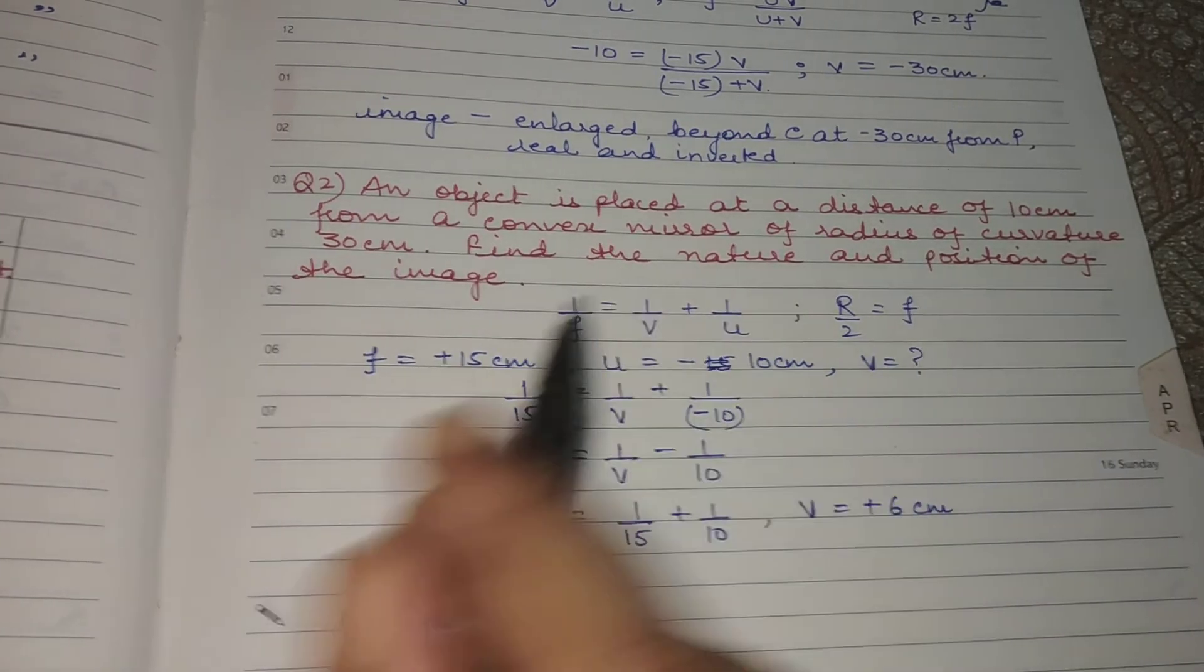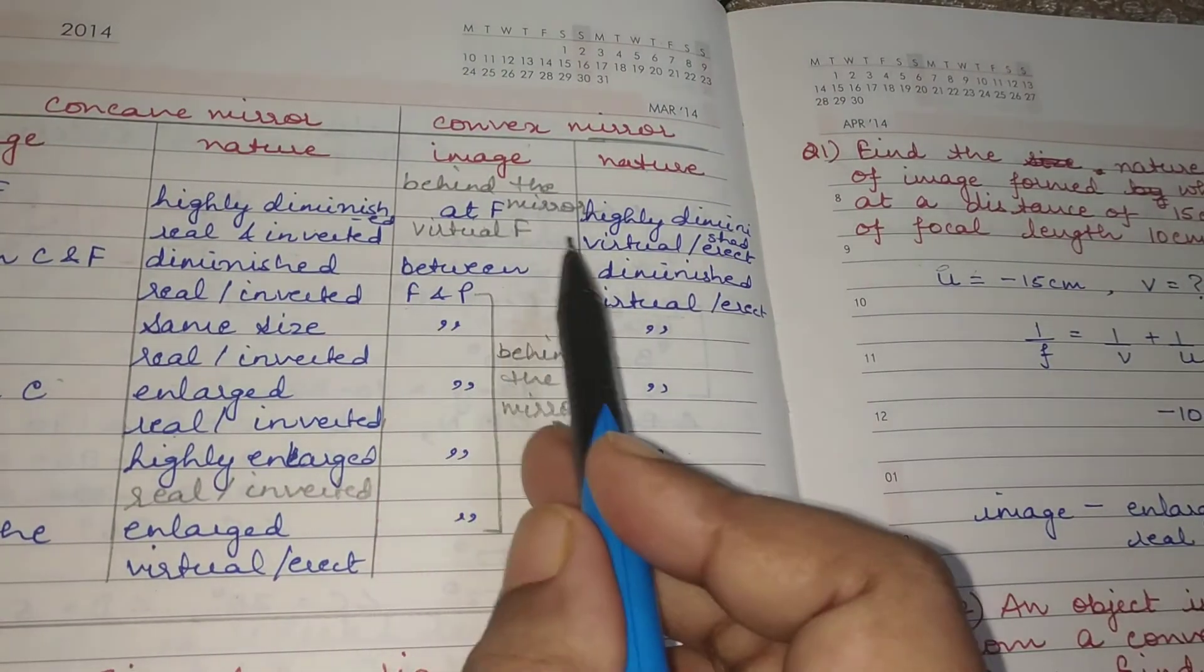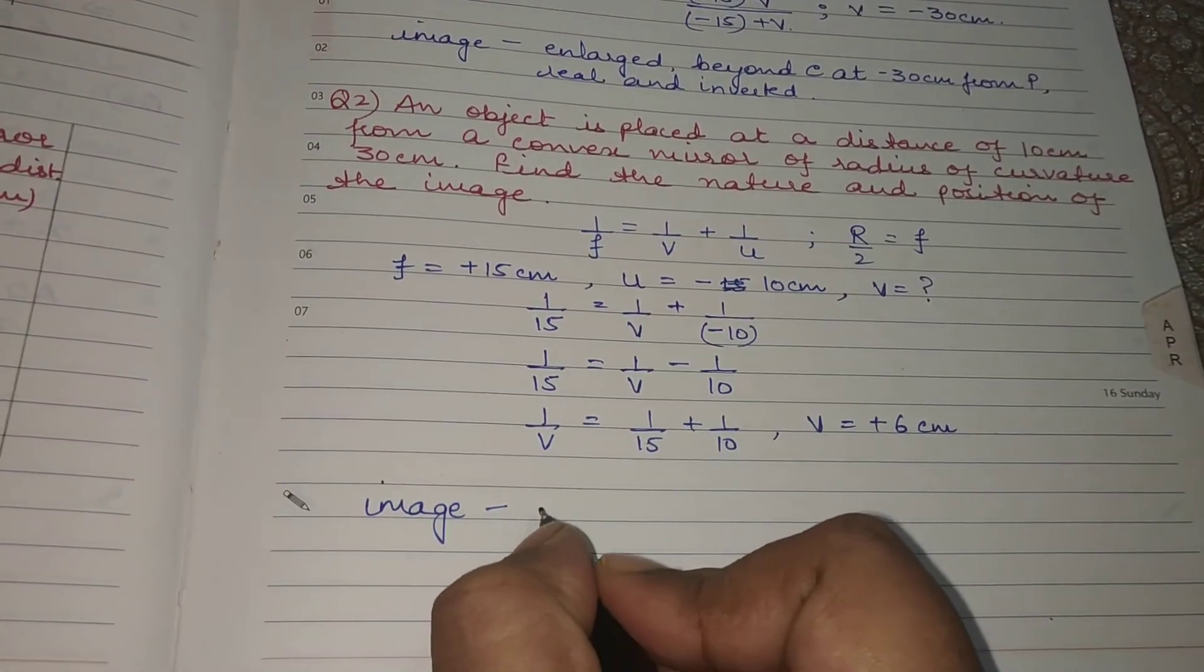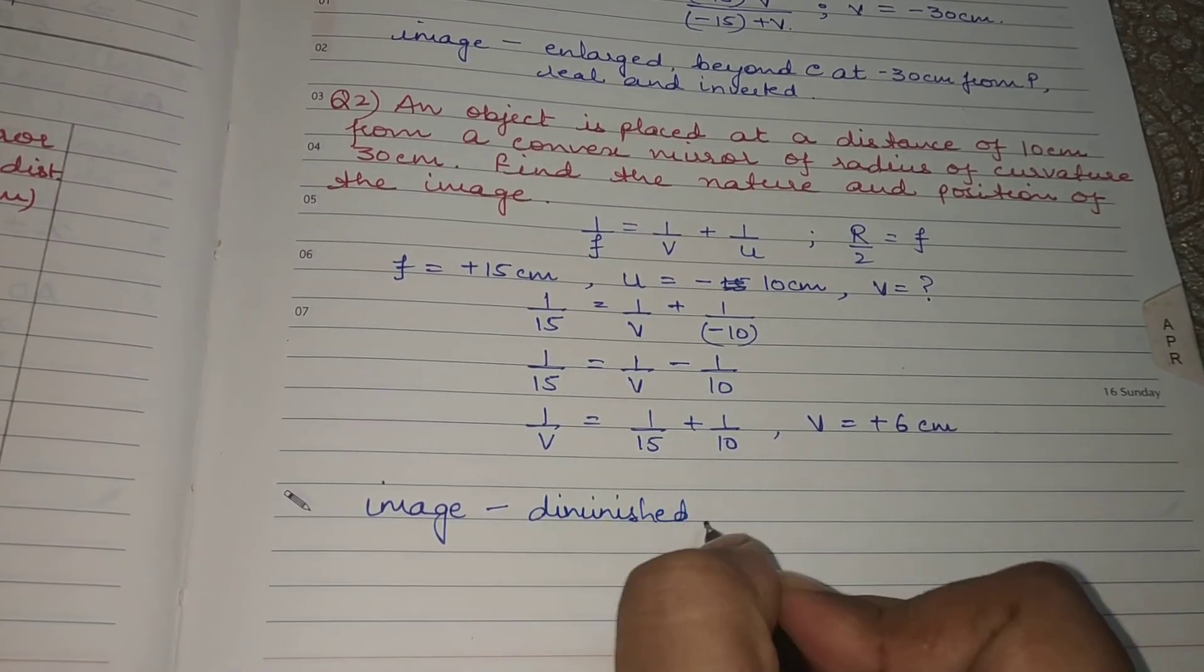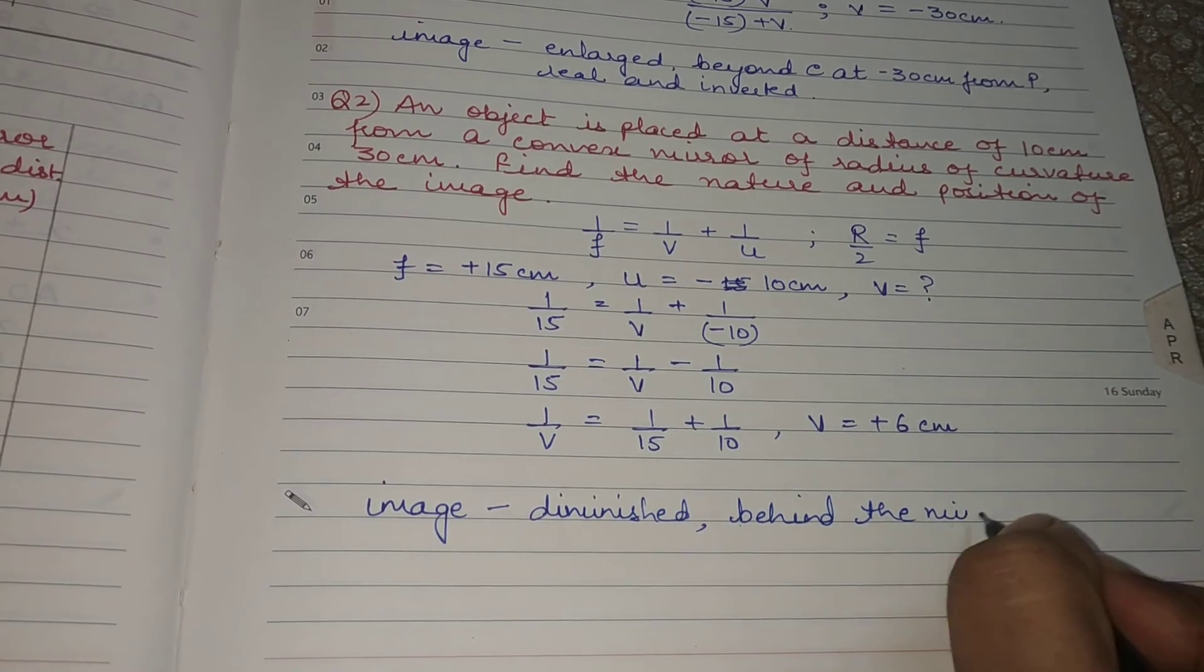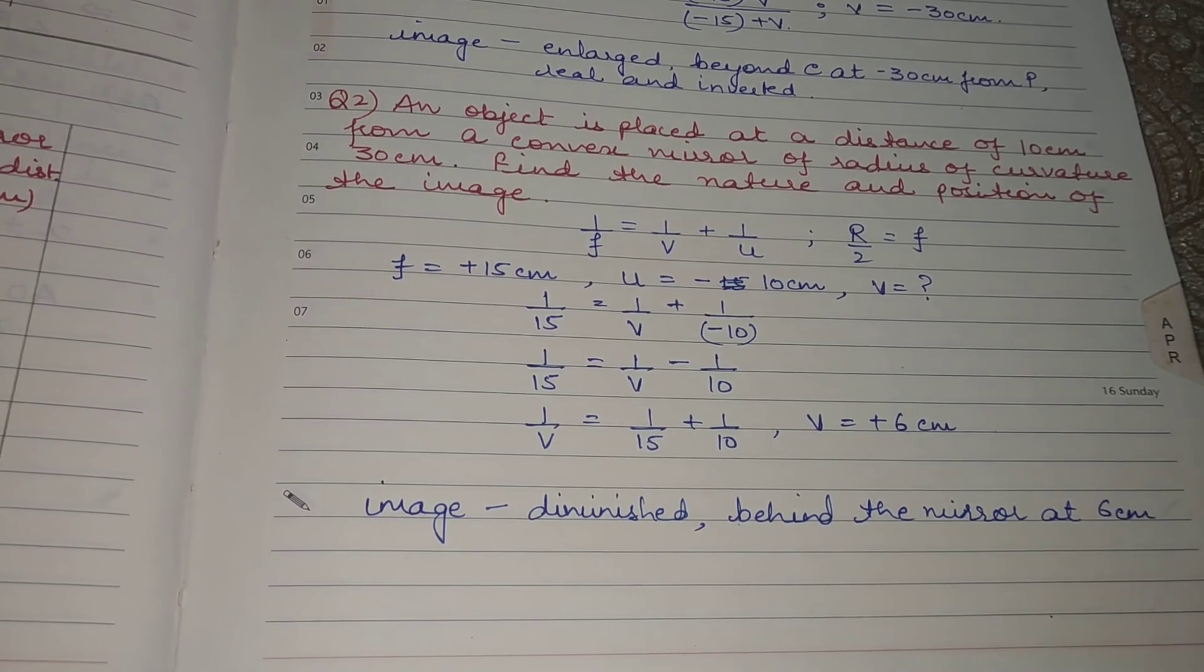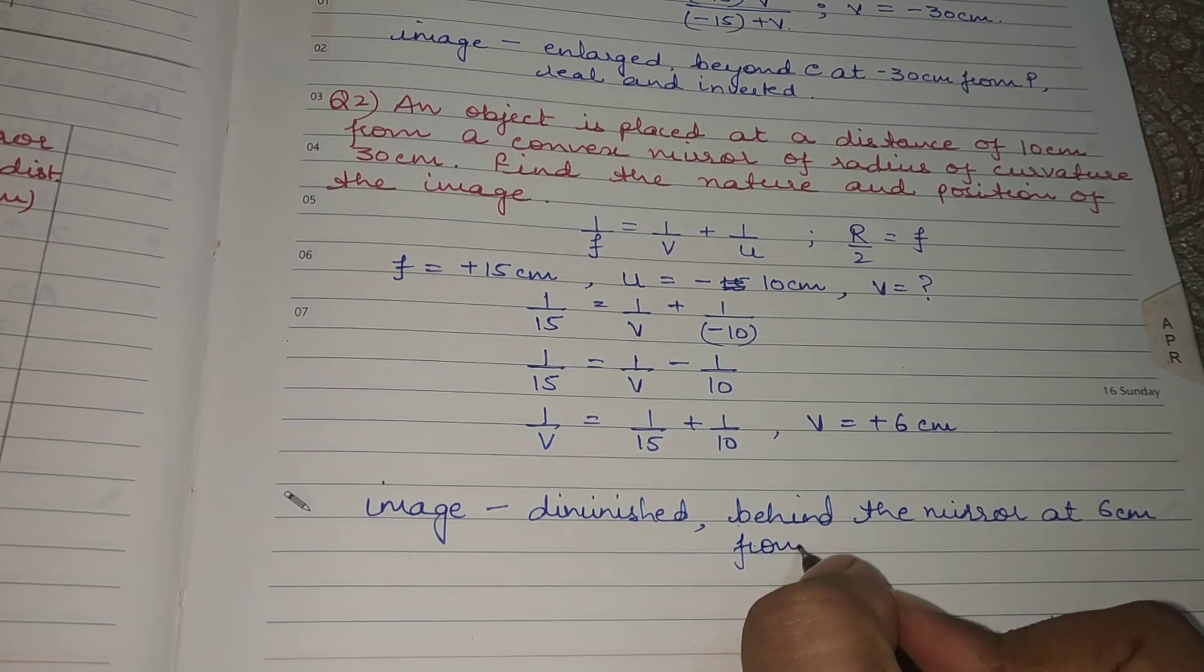Image is diminished. Always you get a diminished image as per the table. It is formed behind the mirror and it is always diminished. So here also you get a diminished image. It is formed behind the mirror at 6 cm from pole.